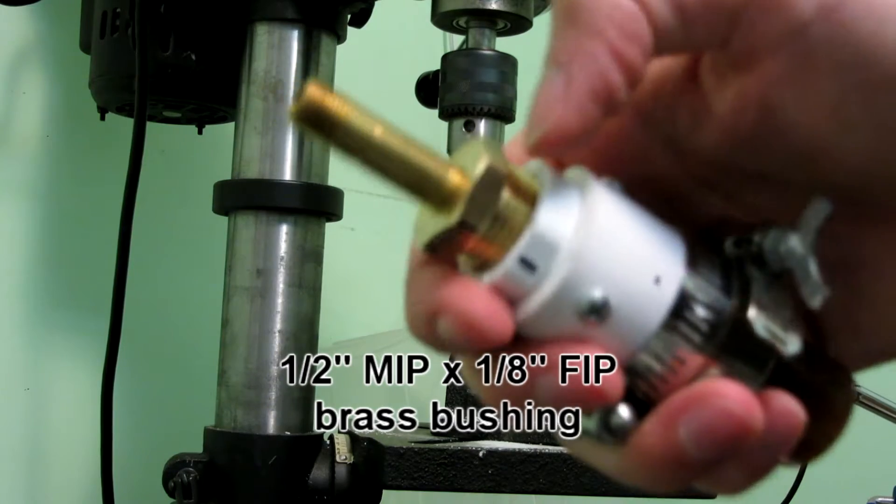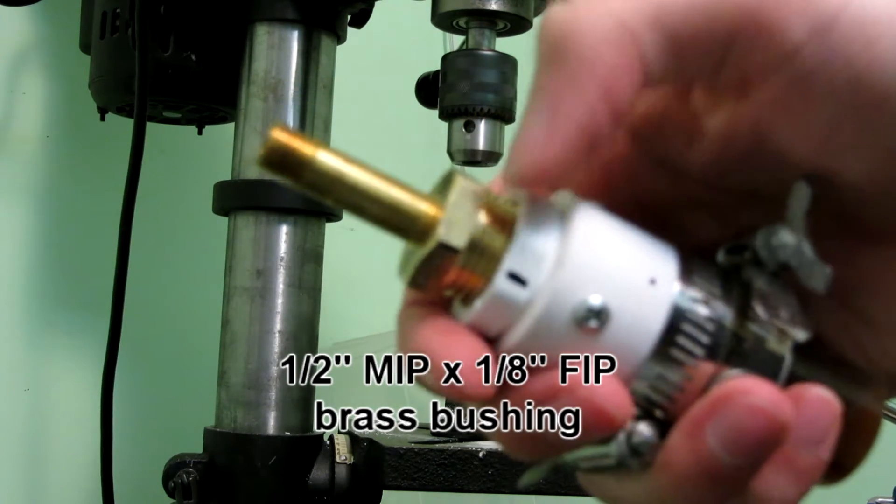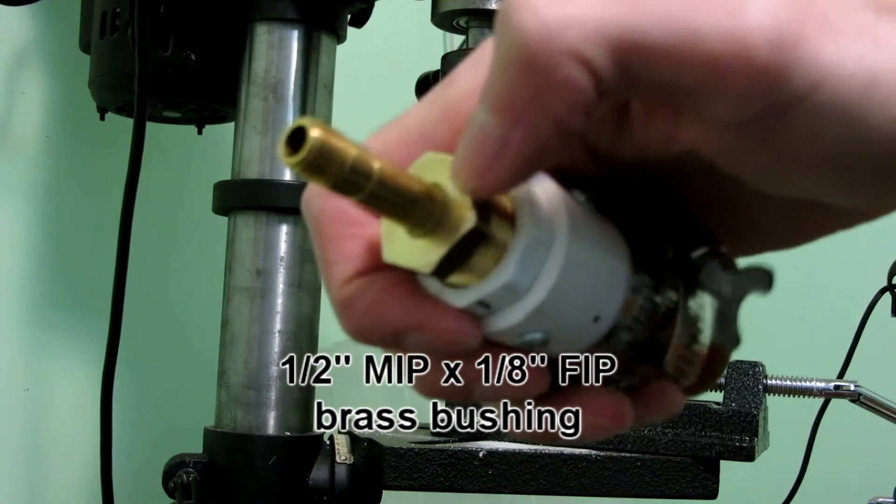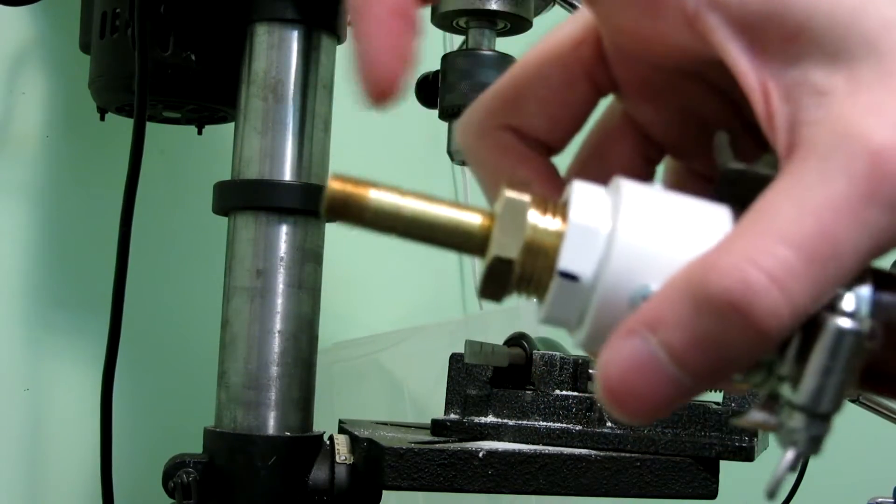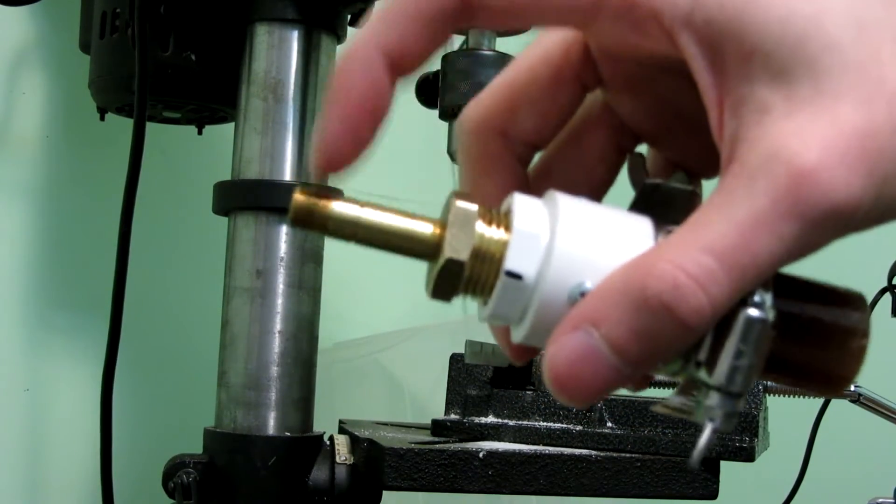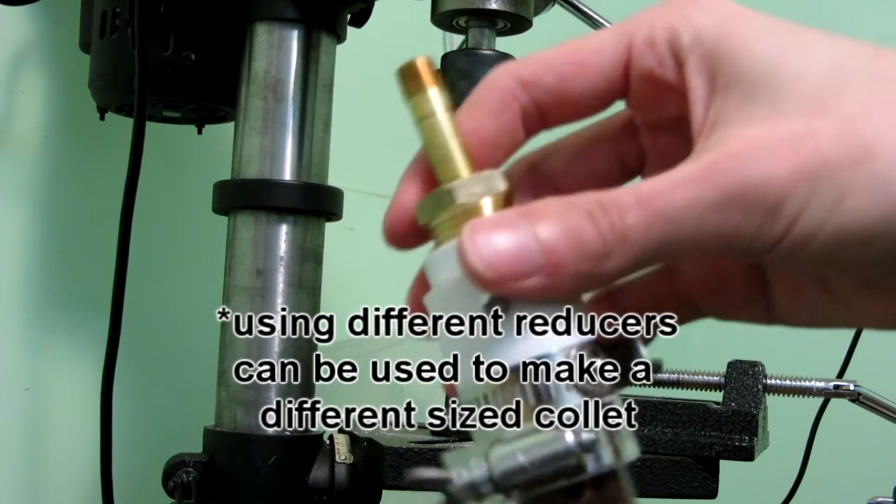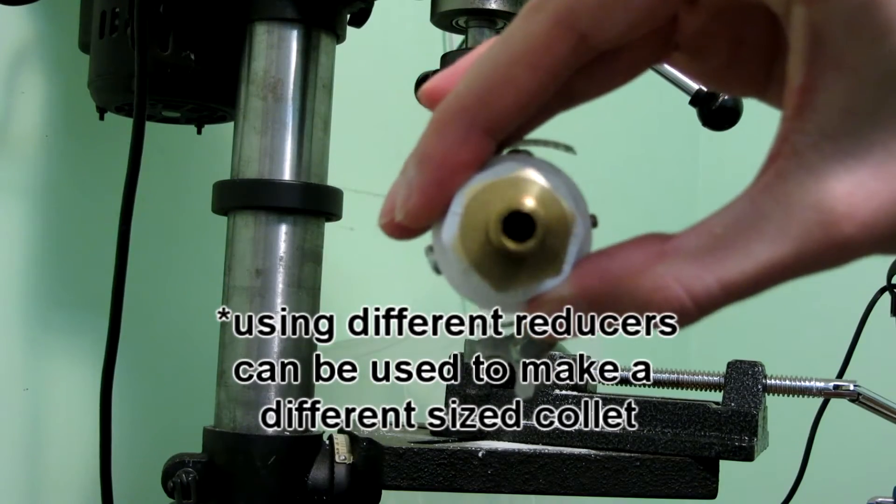This is half inch MIP on this side and 1 eighth inch FIP on this side. M is for male, F is for female. Then I have this extra kind of 1 eighth inch MIP nipple. By having all of these reducers, you have something that is centered pretty well.